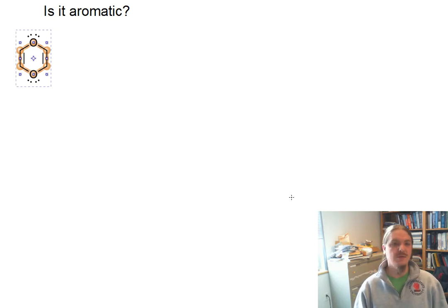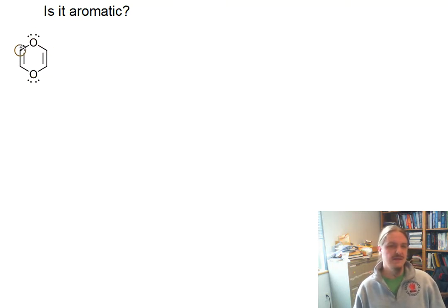Hello. In this video, we're going to apply Hückel's rule and some other principles to help determine whether some heterocycles are aromatic. And I'm going to start with this example here. This is a six-membered ring. It has some pi bonds and some oxygen, two oxygen atoms in it, and I've drawn in the lone pairs because we're going to need them.